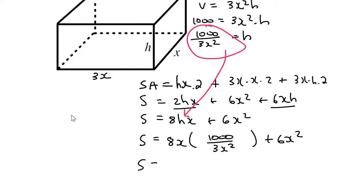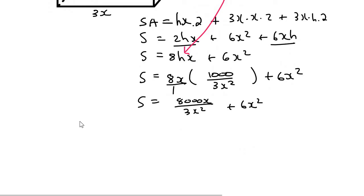Then I'm just going to simplify that by multiplying the 8x in. So that's going to become 8,000x over 3x squared plus 6x squared. We can then simplify this as, I wouldn't divide the 8,000 by 3 and write it as a decimal. Rather keep it like this. And it's going to give you 8,000 over 3x. Because if you have x squared at the bottom and x at the top, you'd have 1x left over at the bottom plus 6x squared.